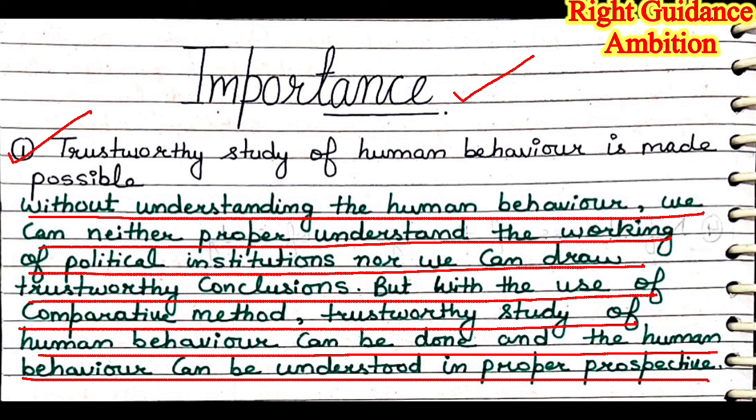Next heading: Importance. First point — trustworthy study of human behaviour is made possible. Without understanding human behaviour, we can neither properly understand the working of political institutions nor draw trustworthy conclusions. The most important central role in a political system is played by humans, and studying human behaviour helps us understand how the political system is working. With the use of comparative method, a trustworthy study of human behaviour can be done.